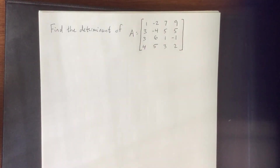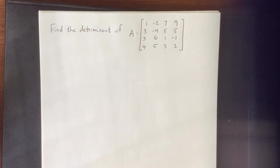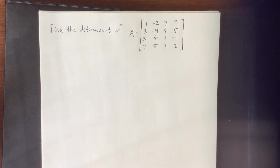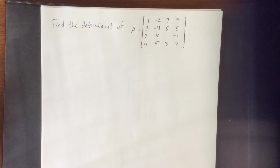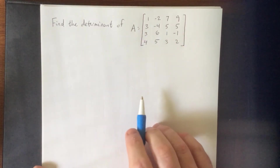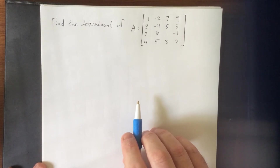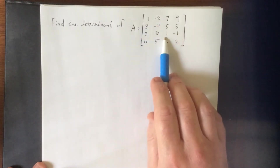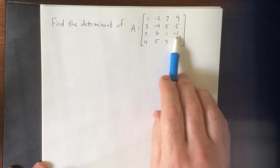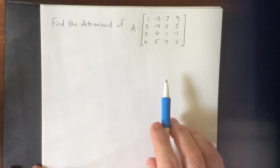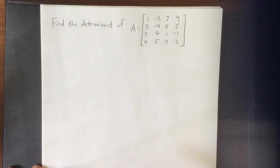We've been asked to find the determinant of this very big-looking matrix. We learned from the last section what cofactor expansion is — we could simply turn this into four 3x3 determinants. However, in this section we've learned that elementary row operations, specifically adding a multiple of one row to another row, does not have an impact on the determinant. So I'd like to use some of those elementary row operations to knock this thing down a couple pegs.